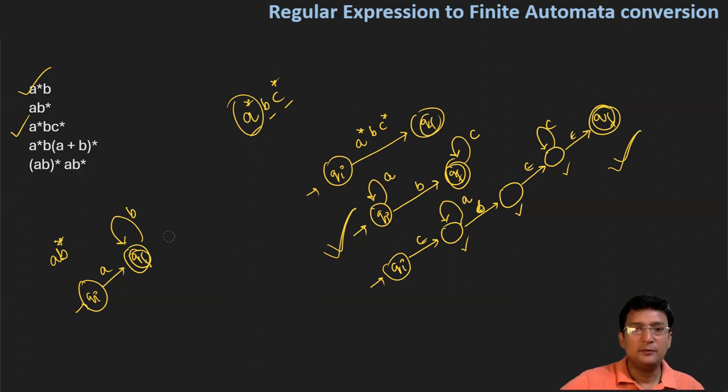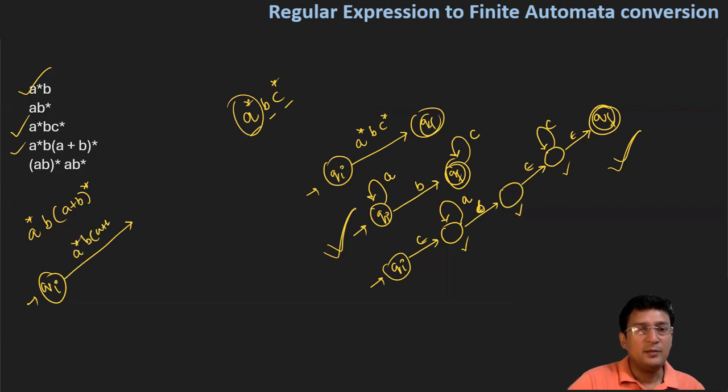Next example is a*b(a+b)*. This has multiple components: a*b and (a+b)*. Step by step process - initial state, then through a*b and (a+b)* you can reach the final state. For (a+b)*, you need to break down the automata.